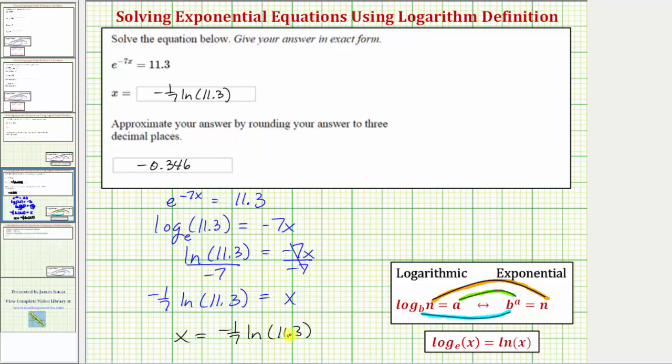Let's verify our solution is correct by substituting this value into the equation and make sure it satisfies the equation. So beginning with e raised to the power of negative seven x equals 11.3, we'll perform the substitution for x.